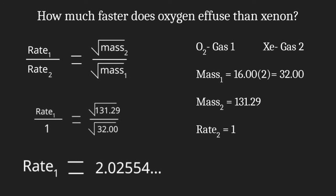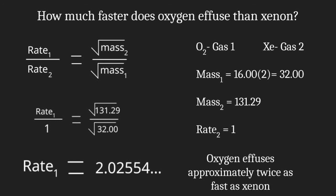Now, that doesn't mean that the rate at which oxygen effuses is 2.02 meters per second or something like that. Instead, it tells us that it is 2.02 times faster than xenon, which is actually what we're looking for. So here, we're going to say that oxygen will effuse approximately twice as fast as xenon.